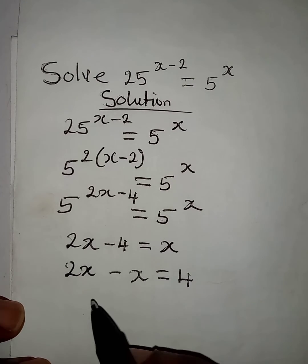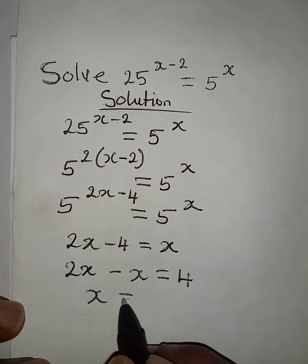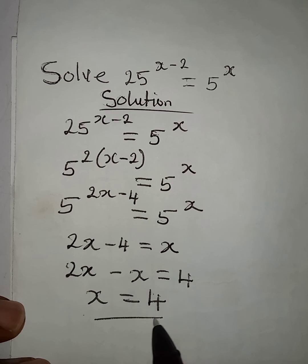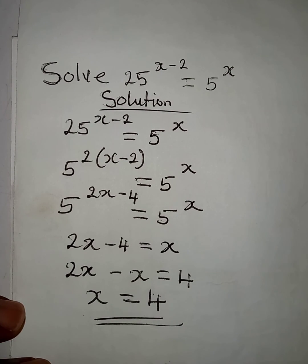From here, 2x minus x will give us 1x, and this is equal to 4. Therefore, the value of x in this equation is 4. Thank you for watching.